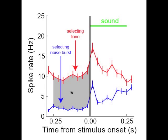Compared with when the rat is about to select the noise burst, the blue trace. Then the sound comes on, and the neuron's response is still elevated while selecting the tone, suggesting that this change of baseline activity leads to an equivalent change in stimulus-driven activity.